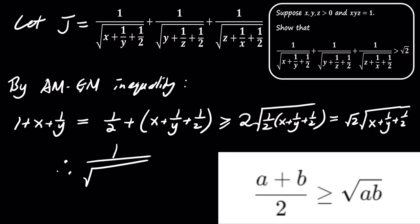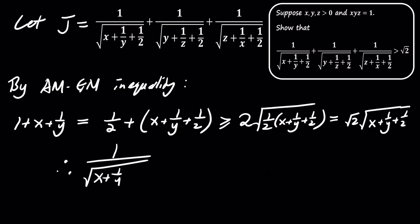Therefore, we deduce that 1 divided by the square root of x plus 1 over y plus 1 half is greater than or equal to the square root of 2 divided by 1 plus x plus 1 over y.